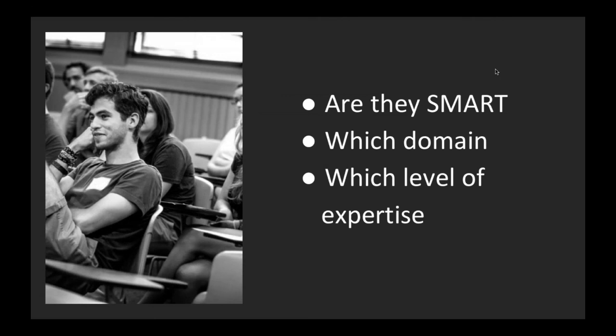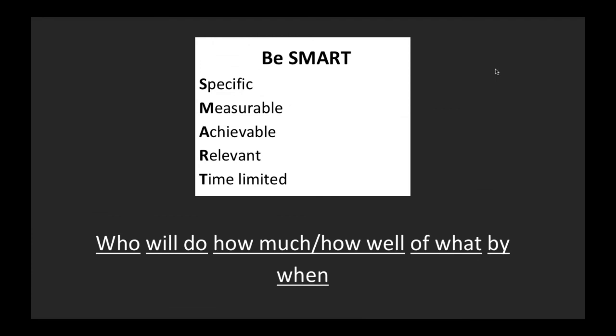There are three things to focus on about writing quality objectives: are they SMART, which domain are you targeting, and which level of expertise. A good learning objective is clearly described, easy to understand, and appropriate given the context. They need to tell you who will do how much or how well, of what, by when. The helpful mnemonic is the SMART rule: is my objective specific, measurable, achievable, realistic, and timely? Sometimes you may see people write verbs like know and understand, but how does one truly assess knowing and understanding? Using action verbs such as explain and demonstrate are better because they are both measurable and specific.